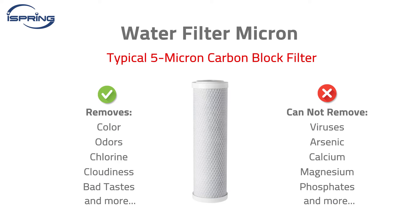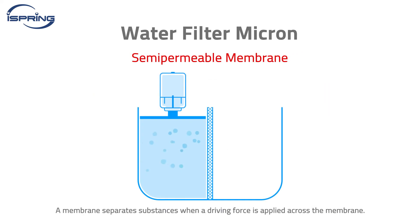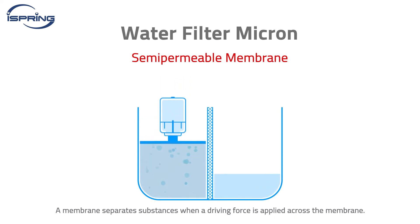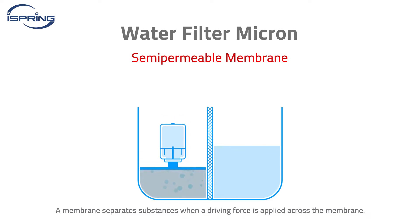However, ions like fluoride, lead, sodium, and calcium will require finer micron filters or different filtration methods to remove from water. A membrane is a thin layer of semi-permeable material that separates substances when a driving force is applied across the membrane.